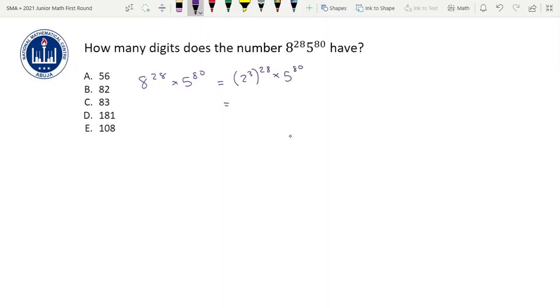And then 2 raised to power 3 raised to power 28 will be 2 raised to power 3 times 28 and we have times 5 raised to power 80. And 3 times 28 is 84 so this will be 2 raised to power 84 times 5 raised to power 80.